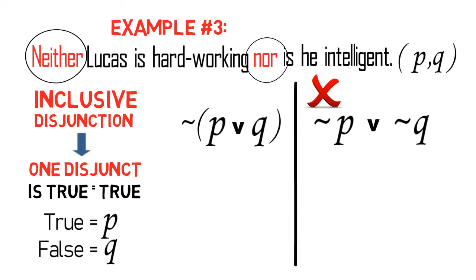And so, in the symbol ~(P v Q), if P is true and Q is false, then P or Q is true according to the rule in inclusive disjunction. But since the entire proposition has to be completely negated, thus ~(P v Q) becomes false.